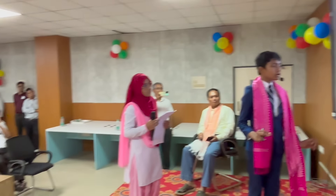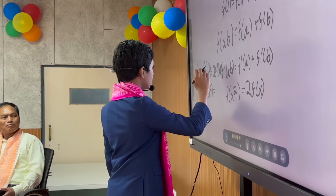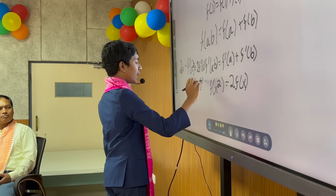Now, what we are going to do is take the derivative via the chain rule, which gives us f'(x²)·2x = 2f'(x). So essentially, x·f'(x²) = f'(x).